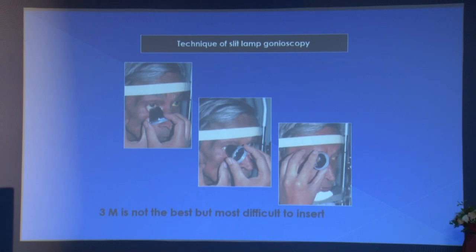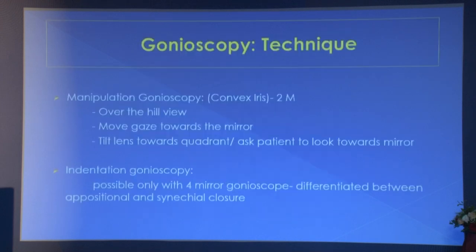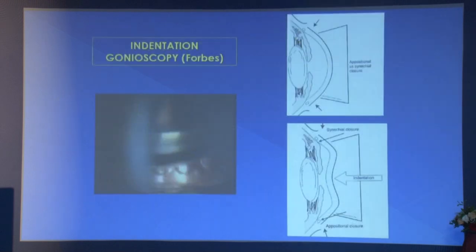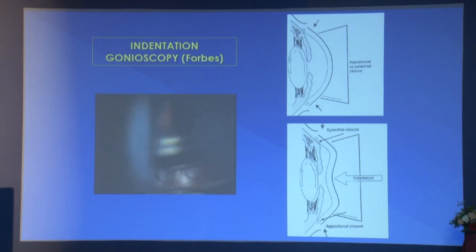The 3-mirror gonioscope insertion is the most difficult and is not used practically for gonioscopy. The manipulative gonioscope gives you the over-the-hill view - details published by Dr. Ravi Thomas in IGO around 2000-2001. Move the gaze towards the mirror, tilt the lens towards the quadrant, and ask the patient to look towards the mirror; this gives the over-the-hill view because the convex iris acts like a hill. Indentation gonioscopy is possible only with a 4-mirror gonioscope - it differentiates between appositional and synechial closure. This cannot be done with mirrors where the contact area exceeds the size of the cornea.